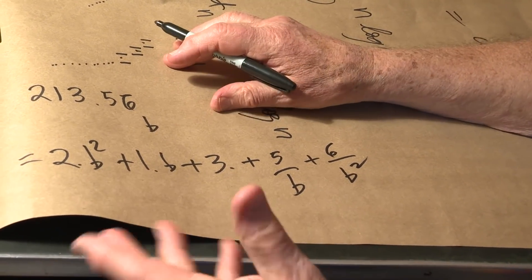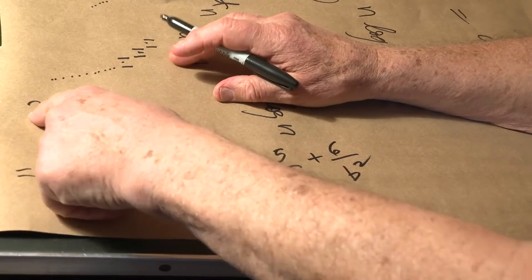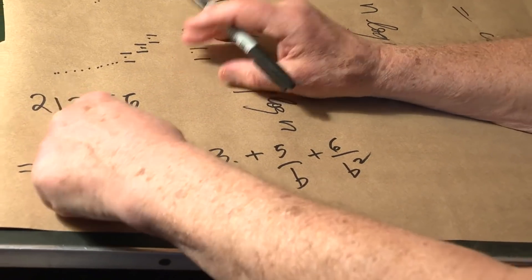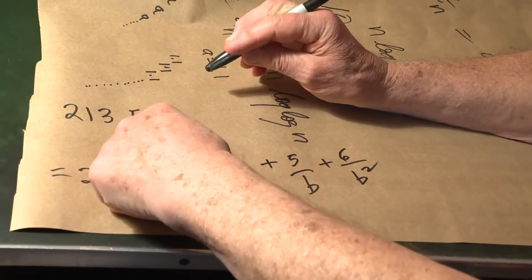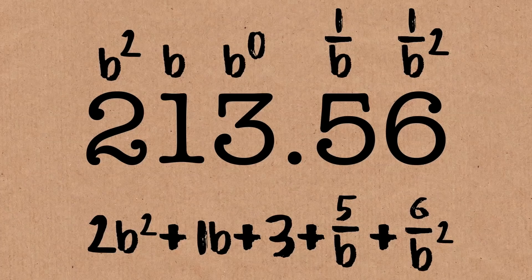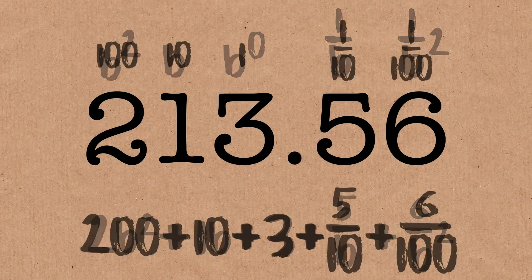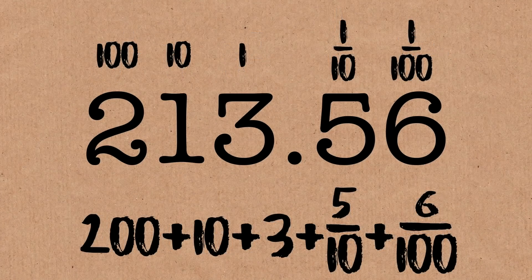It's exactly what you do when reading a decimal number. If it was base 10, you'd say we've got 213 dollars and 0.56 — this 0.5 means 5 over 10, and the 6 means 6 over 10 squared.